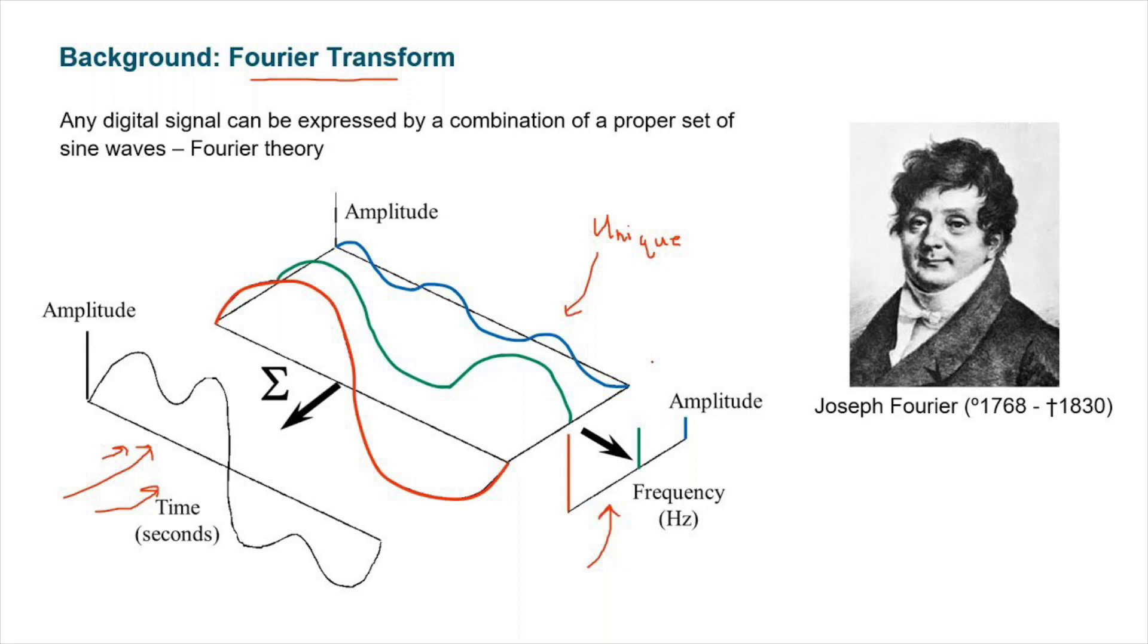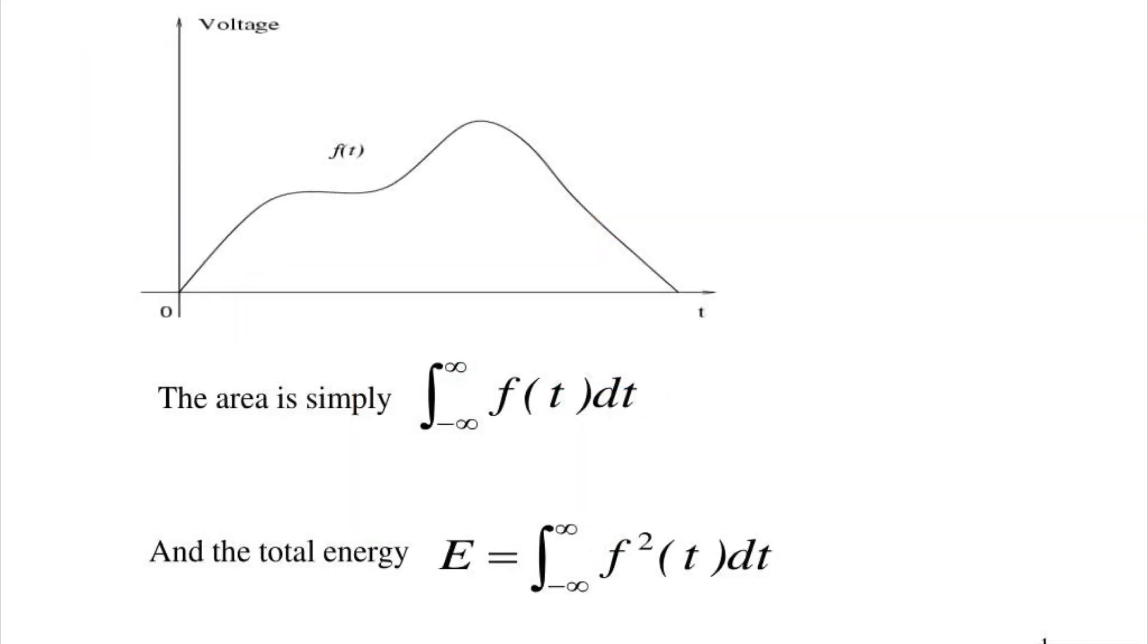Let's explore some practical applications. In time domain analysis, we can measure the duration of a signal, calculate the signal's energy, or determine the time taken for the signal to reach its peak value. In contrast, frequency domain analysis enables us to identify the dominant frequencies present in a signal, perform filtering operations, and understand the frequency response of a system.